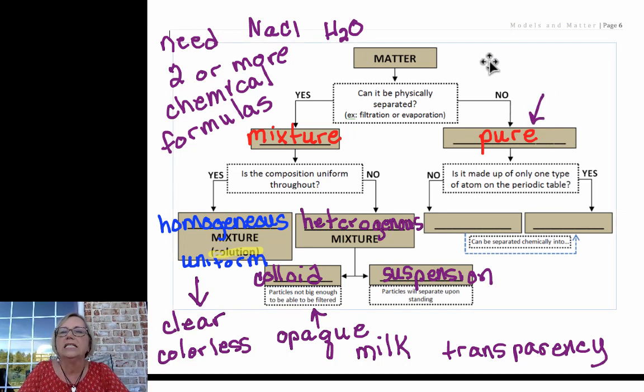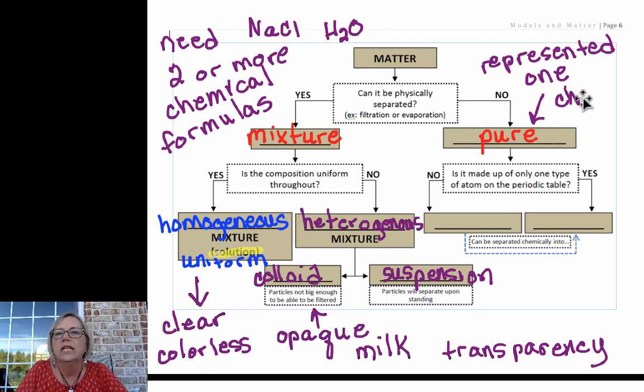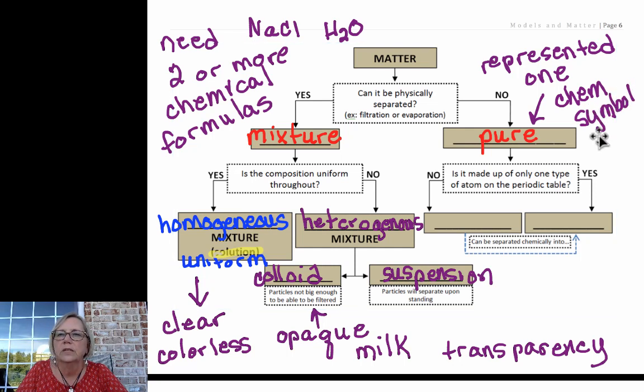Pure substances, on the other hand, can be represented—symbols have meaning, we have to be very careful how we represent things—and these can be represented by one chemical symbol or formula.